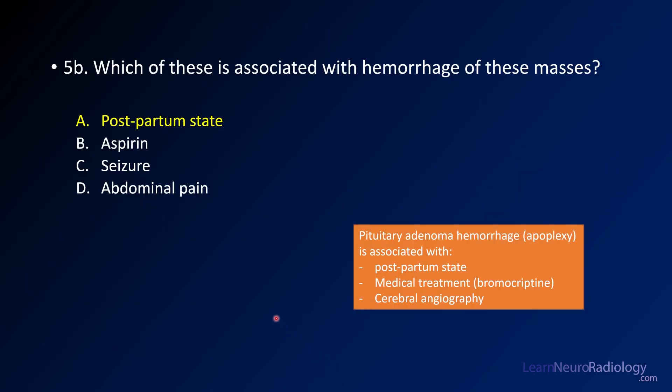The answer to the second question — which is associated with hemorrhage of these masses — is hemorrhage of a pituitary adenoma, called pituitary apoplexy. There are a couple of things associated with it, including being postpartum, being on medical treatment for prolactinoma such as bromocriptine, or as seen in some review books, receiving a cerebral angiogram. If you see one of those things, that should lead you to think apoplexy is more likely.